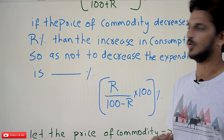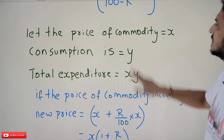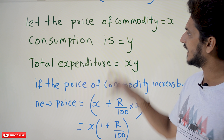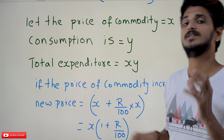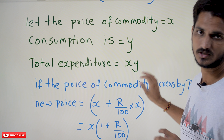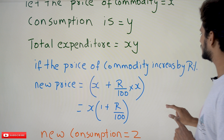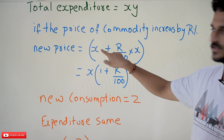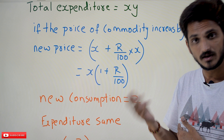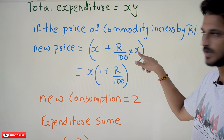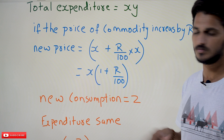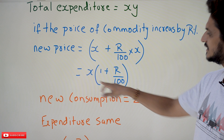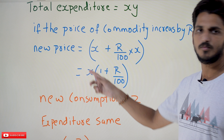Coming to the first formula, we are going to derive it. Let the price of the commodity be x and the amount we are consuming be y. So x is the price of the commodity and y is the consumption. The expenditure is equal to x times y. Now if the price of the commodity increases by r percent, the new price is x plus r percent of x, which is x plus (r/100) times x. Taking x as common, the new price is x times (1 plus r/100).